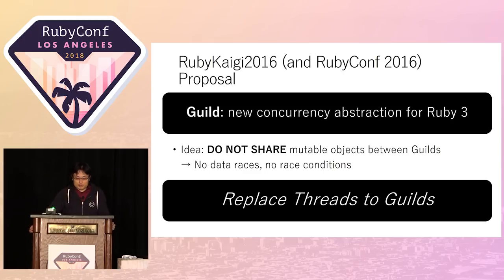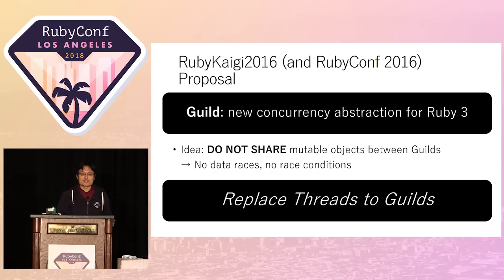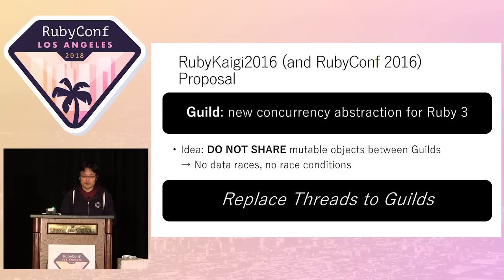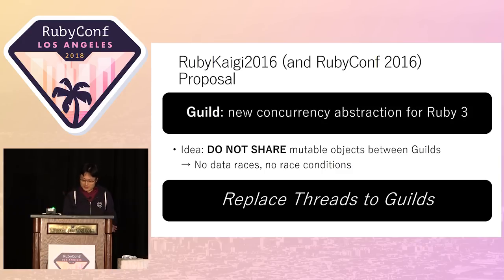As I said, the difficulty of thread programming is sharing mutable objects between threads. So the idea is simple: Guild prohibits sharing mutable objects between Guilds. I want to replace threads with Guild because of this productivity benefit.